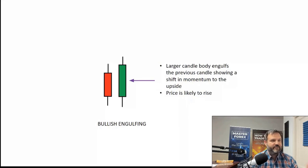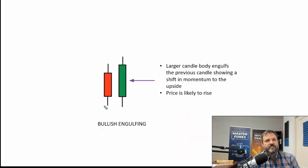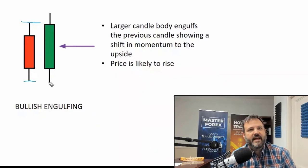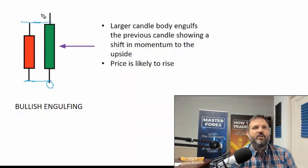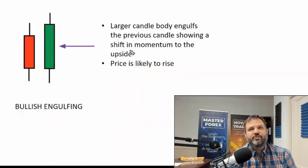The next candle we want to look at is what we call the bullish engulfing pattern. You might also hear me call it an outside candle. It covered the downside and the upside — the reason it's called engulfing is because the larger candle takes the entire previous candle. The larger candle engulfs the previous candle, showing a shift in momentum to the upside, and price is likely to rise.